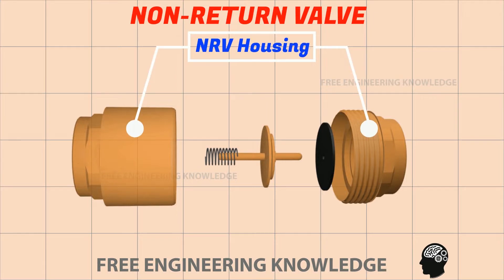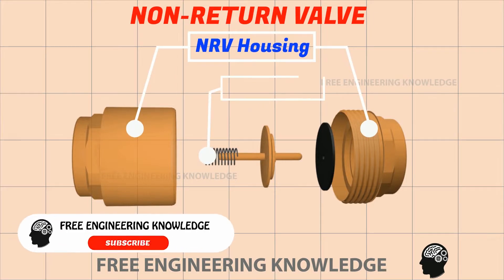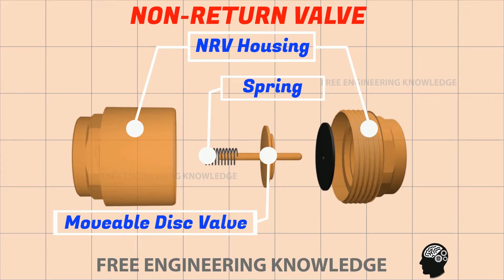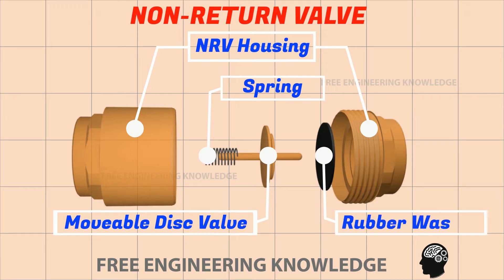The internal parts of the non-return valve are: the housing, the spring — which helps to close the non-return valve immediately — the movable disc valve — through which the non-return valve is opened and closed — and the rubber washer, which helps the closed non-return valve seal well. Now let's see how it works.